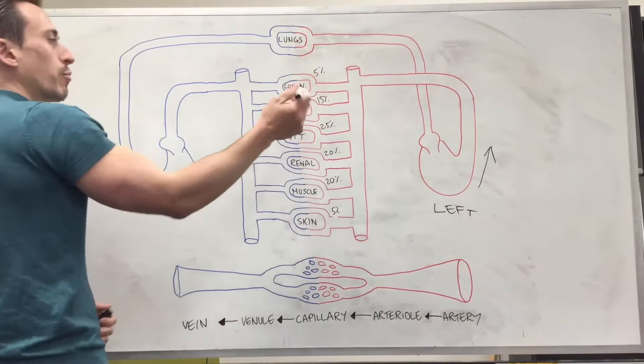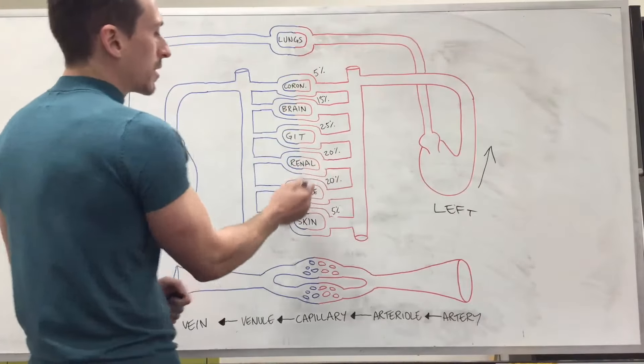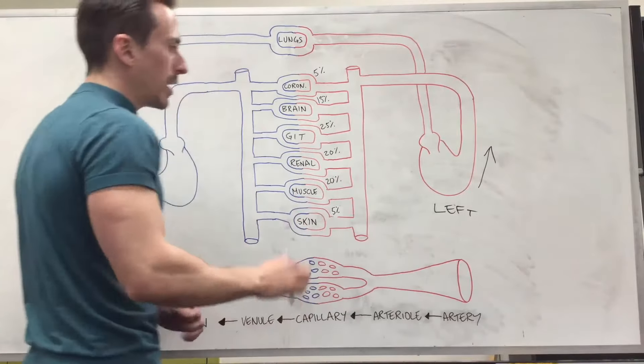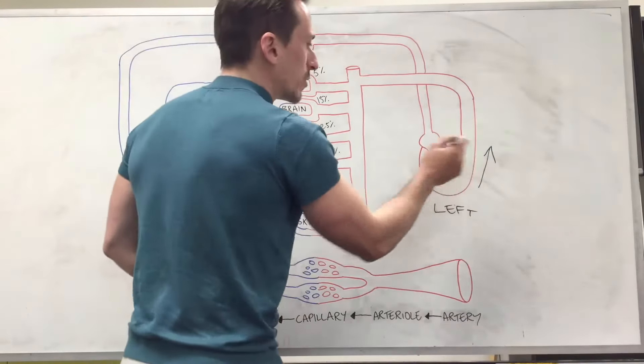This includes the coronary arteries, the brain, the gut, the renal system, the muscles and the skin plus other areas of the body.